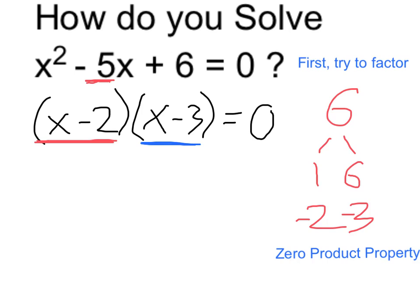x minus 2 is equal to 0, if x itself is equal to 2, because 2 minus 2 is 0. Or, x could equal 3 to make the second binomial equal to 0. 3 minus 3 is equal to 0.